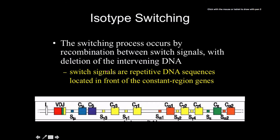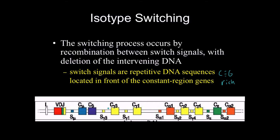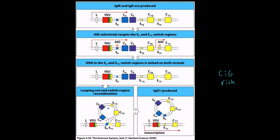The switching process occurs by recombination between switch signals, with deletion of the intervening DNA. Switch signals are repetitive DNA sequences located in front of the constant regions — they tend to be CG-rich, and are analogous to the recombination signal sequences we discussed earlier for VDJ recombination.